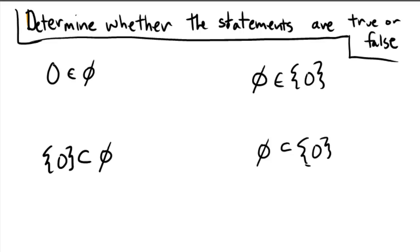Recall that the empty set is the set that has absolutely nothing in it, including zero. Nothing is inside of the empty set at all. So saying that zero is an element of the empty set is a false statement. This statement is false.